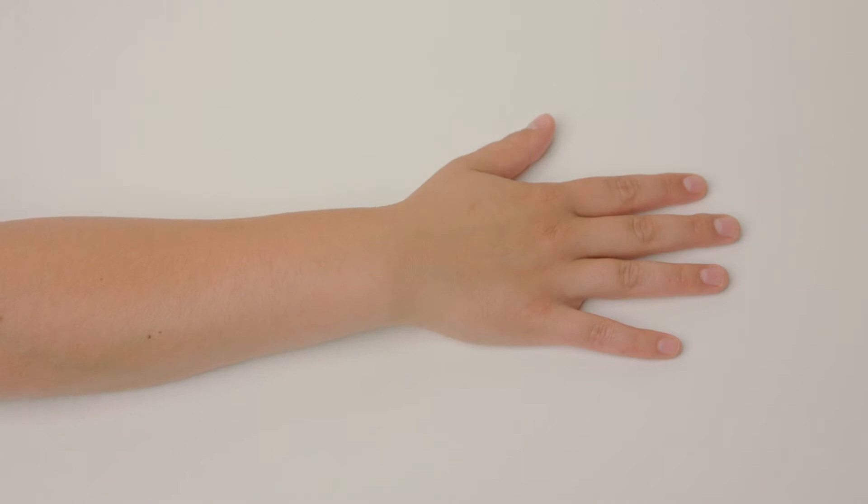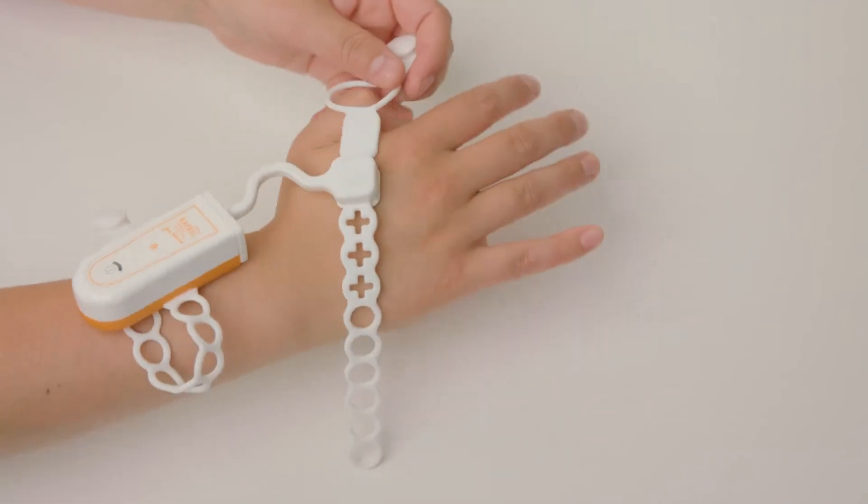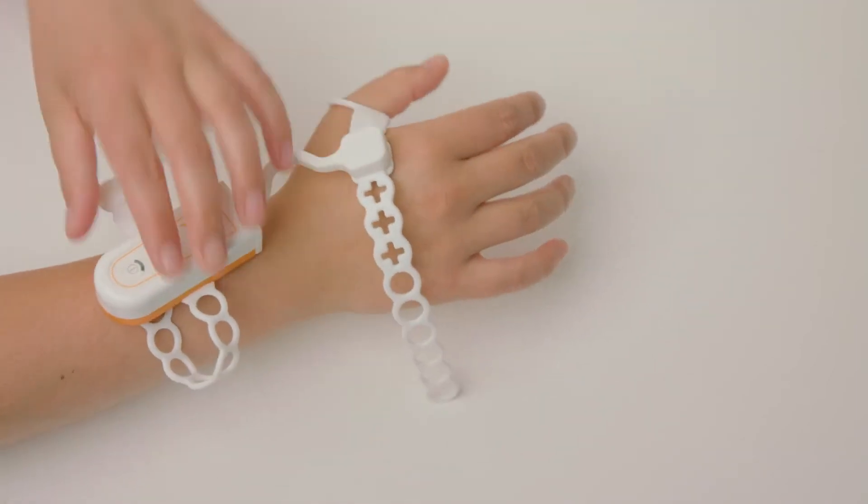Donning the glove is as easy as one, two, three. First, place your thumb through the large oval hole and rest the plus signs across the back of your hand.